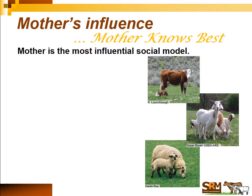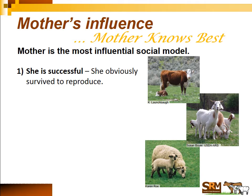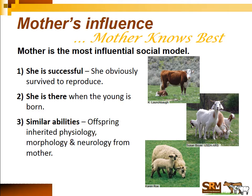Another really important factor influencing which plants an animal chooses or avoids is mother. Mother is the most important social influence on animals, especially when they're young. She was obviously successful — her success is passed from generation to generation — and she's there at birth. She also has similar abilities as her offspring: similar physiology, neurology, and digestive morphology. So foods that are toxic or beneficial to mother may be toxic or beneficial to her young as well.